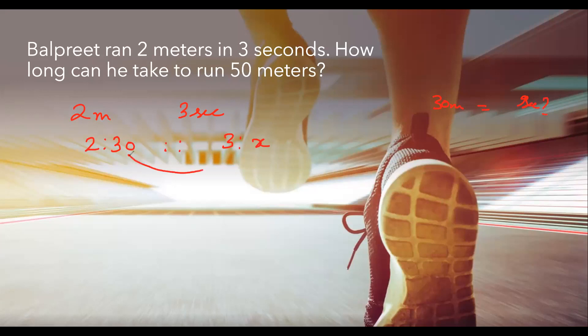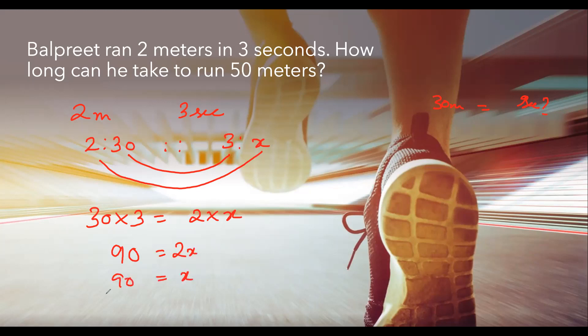Now you know product of mean equals to product of extreme. So 30 into 3 equals to 2 into x. 30 into 3 is going to give us 90 equals to 2x. x will be 90 by 2 which is going to give us 45 seconds.